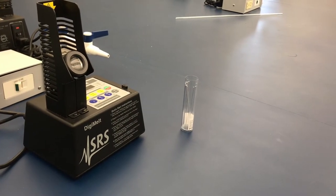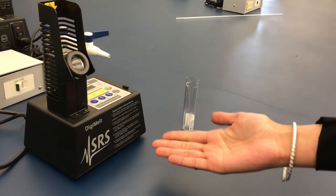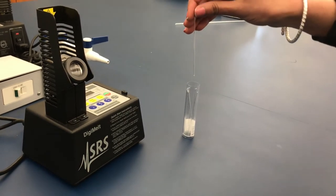In order to find the melting range of a solid, a DigiMelt and melting point tubes which are closed on only one end are required.